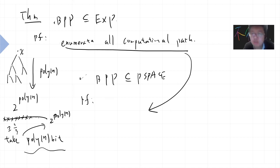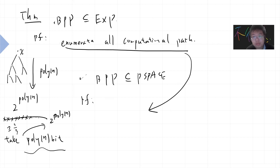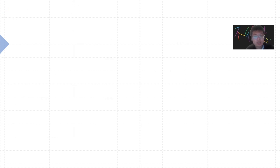This is almost the same as proving that NP is in PSPACE — you just enumerate all computational paths.